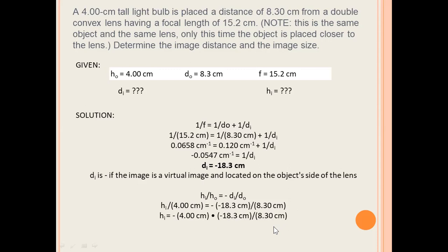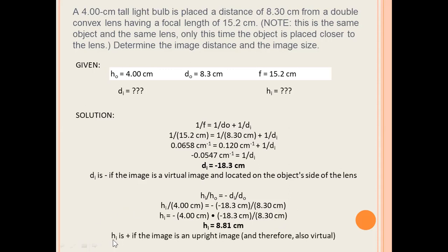Further simplifying gives us HI at positive 8.81 cm. If the height of the image is positive, the image is an upright image and therefore also virtual. On our next video, we're going to talk about diverging lens or concave lens.